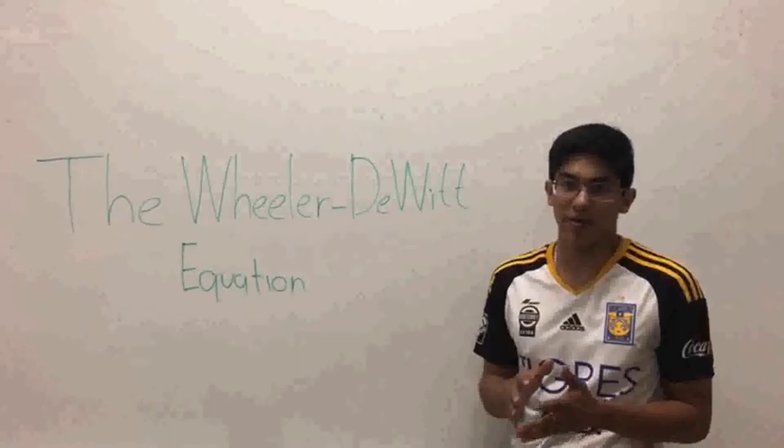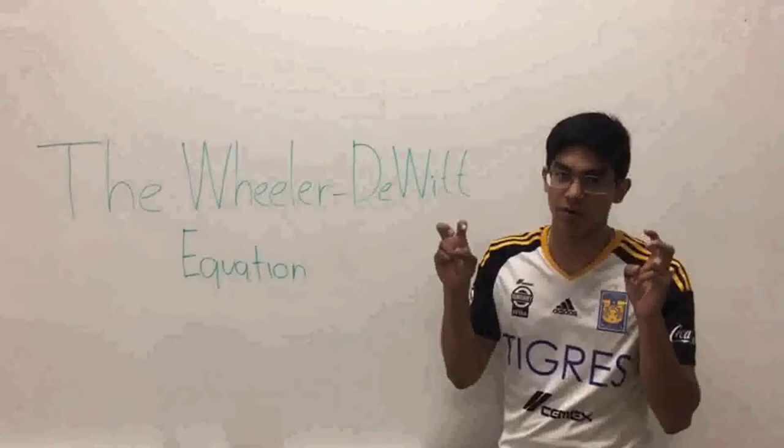After Everett's multiverse theory was practically rejected and ignored, he followed an entrepreneurial career. Then, DeWitt appeared as his most devoted champion with the Wheeler-DeWitt equation.